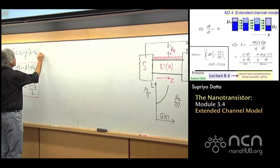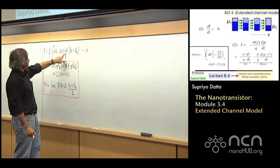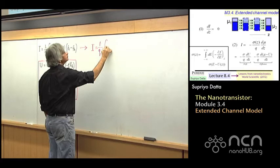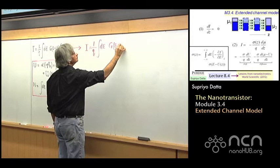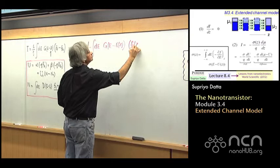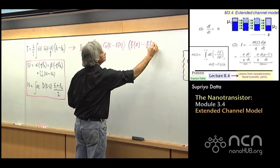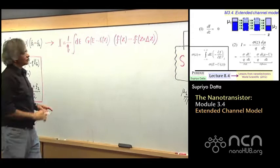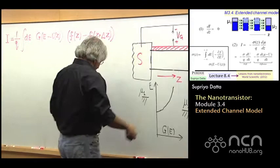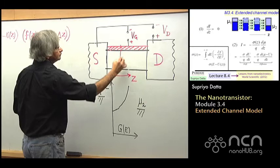You could take this expression for current that we had and write this U in the following form. So let me explain what I did here. What we're doing now is we're thinking of this long channel as being composed of lots of little pieces.